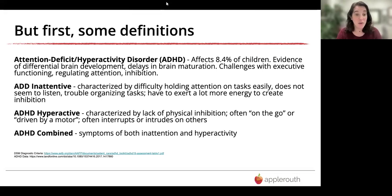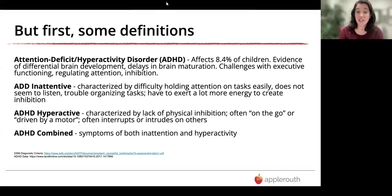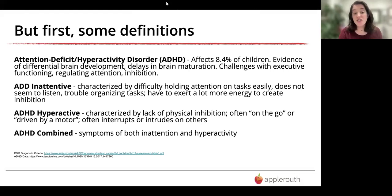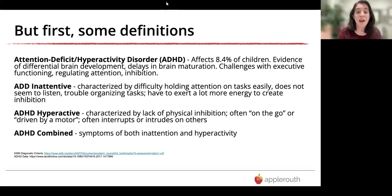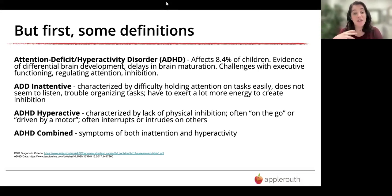There are different types. ADD inattentive is when an individual has difficulty holding their attention on tasks, doesn't seem to listen, might have trouble organizing themselves, and generally has to exert a lot more energy to create inhibition — to not stare out the window. ADHD hyperactive is probably what a lot of people think of stereotypically: a lack of physical inhibition, someone who's on the go or driven by a motor, with a lot of interrupting or physically intruding on others.